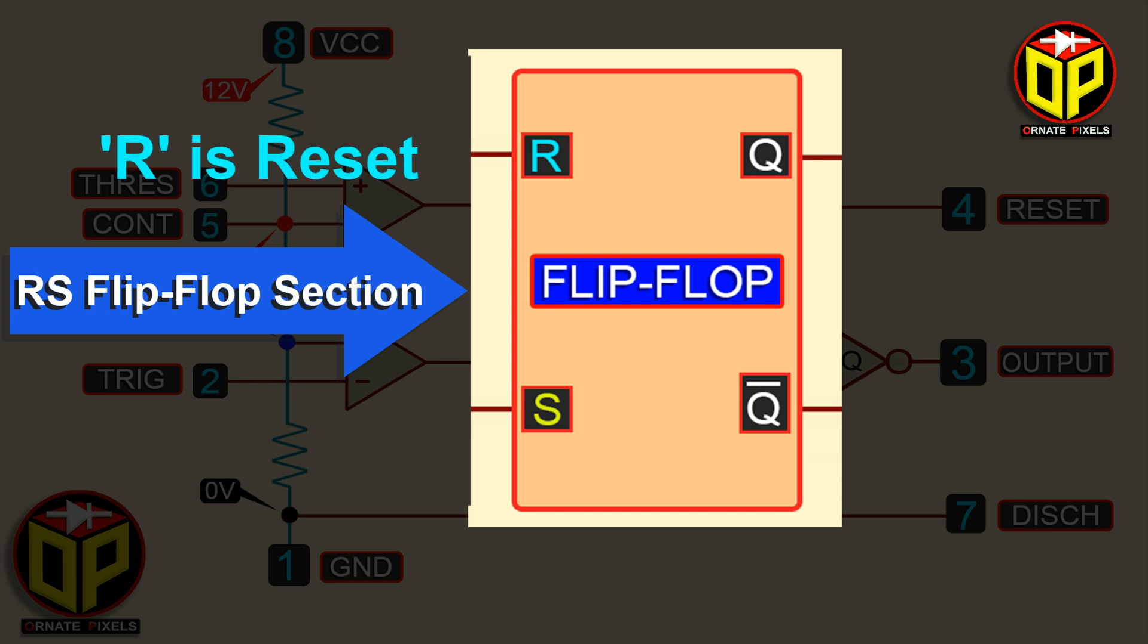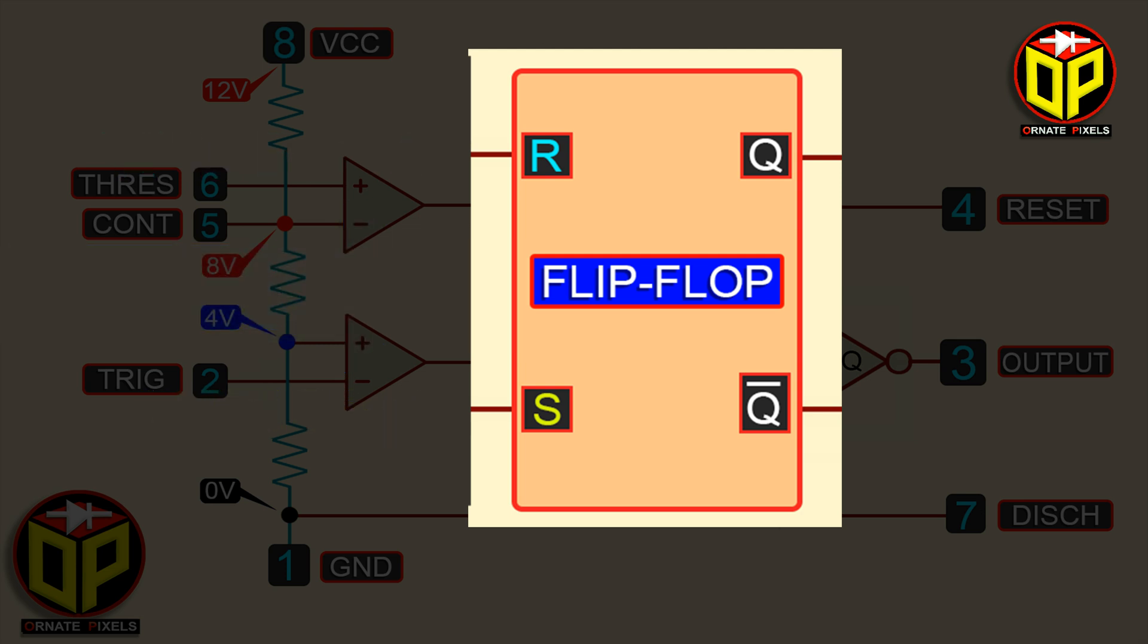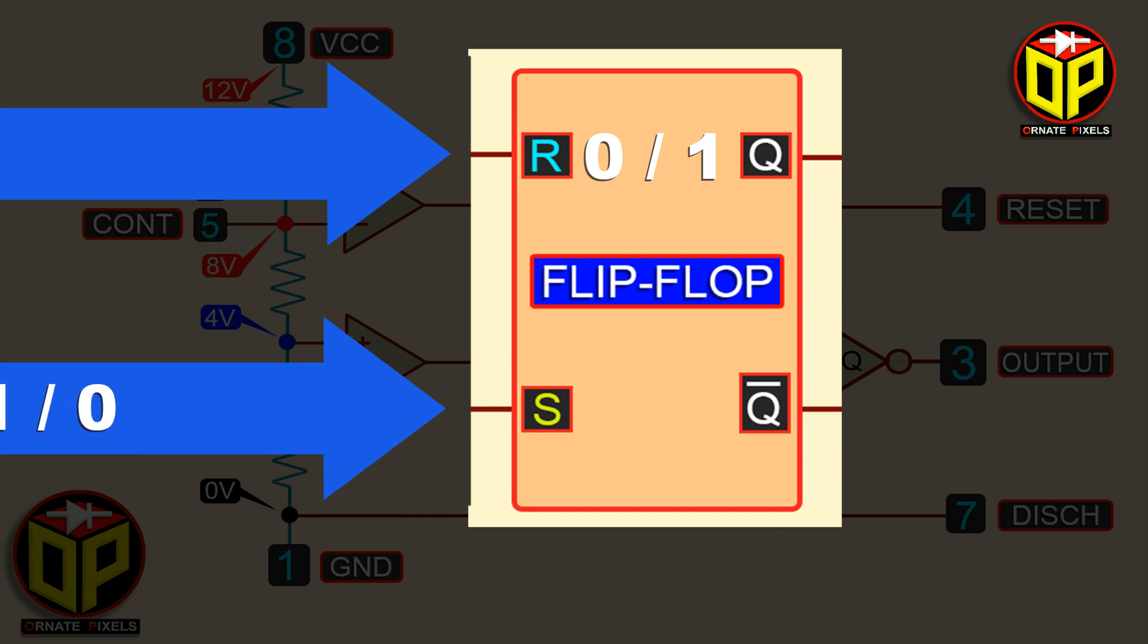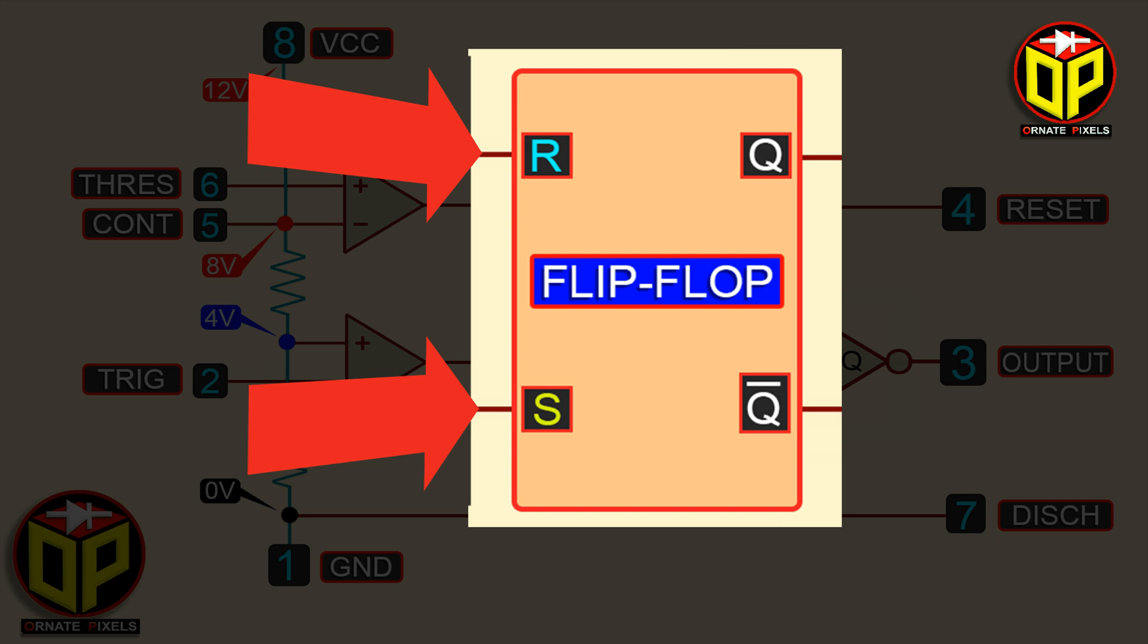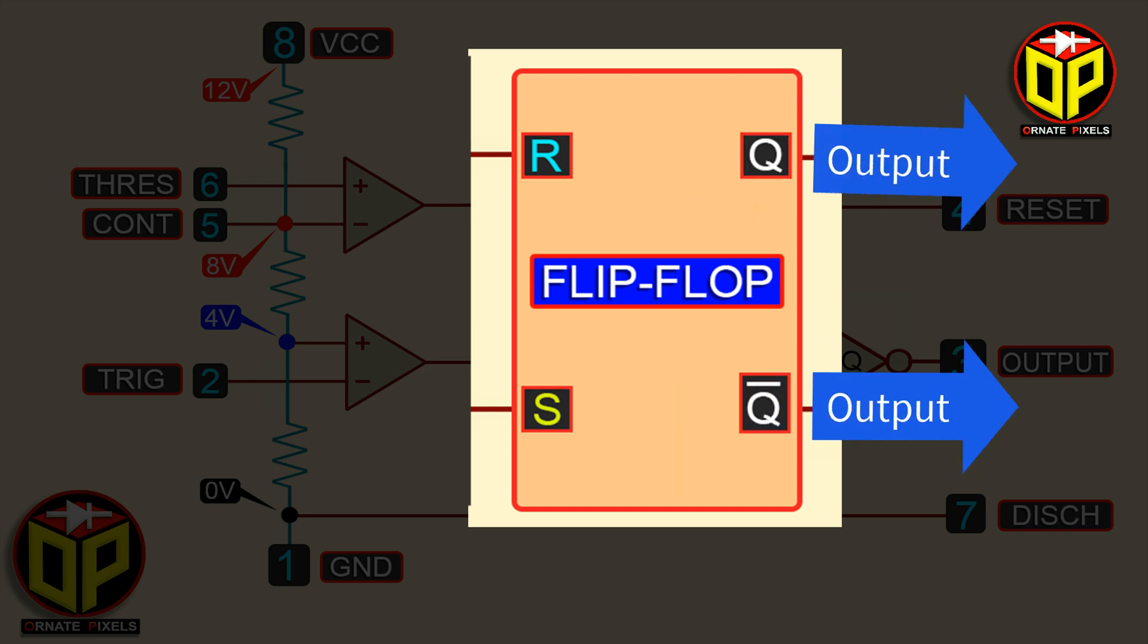Here, R is reset and S is set. That is, R is the reset input terminal and S is the set input terminal. So, these two are the input terminals of the flip-flop section and Q and Q bar are the output terminals.